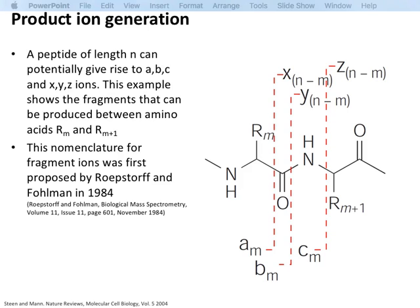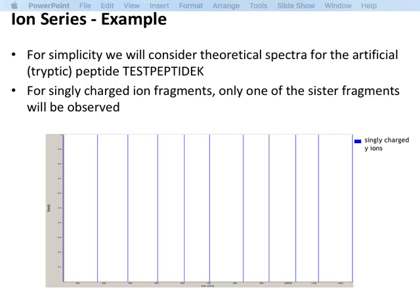The trick with database search is that if you know the sequence, you can predict the masses of the B and Y ions — you can construct a theoretical spectrum. You can do that in a simple script: it's like 10 lines of Python if you have a table with amino acid masses. You just walk over the sequence and sum up the masses up to a certain point. Note that I don't have intensities here — while it's easy to predict the masses, it's very hard to predict relative peak heights. Theoretical spectra normally have unit intensities.